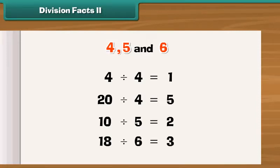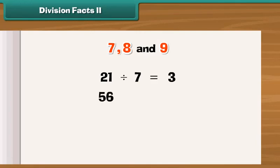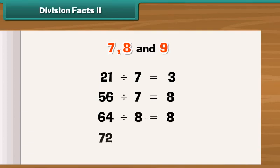Now it's time to know the division facts of 7, 8 and 9. 21 divided by 7 is 3. 56 divided by 7 is 8. 64 divided by 8 is 8. 72 divided by 9 is 8.